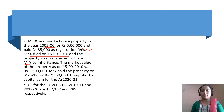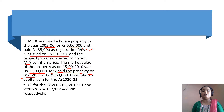Mr. Y is X's son. The market value of the property as on 15-9-2010, that is when it is transferred to his son, was Rs. 12 lakhs. Fair market value was Rs. 12 lakhs. Mr. Y sold the property on 31 May 2019 for Rs. 25,50,000. Compute the capital gain for the assessment year 2020-21. CII for the financial years 2005-06, 2010-11, and 2019-20 are 107, 167, and 289 respectively.